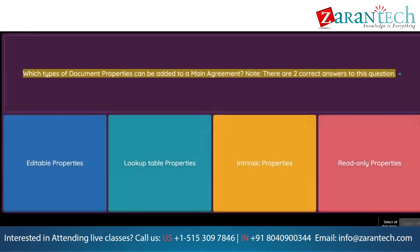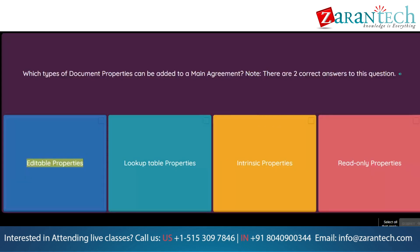Question: Which types of document properties can be added to a main agreement? Note: there are two correct answers. Option 1: Editable properties. Option 2: Lookup table properties. Option 3: Intrinsic properties. Option 4: Read only properties.